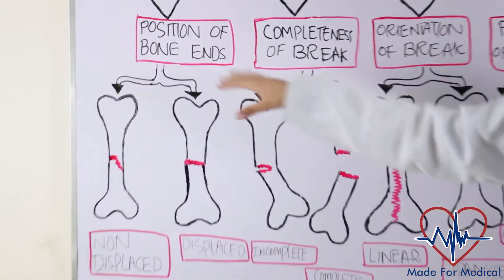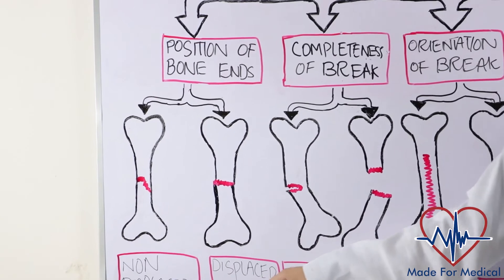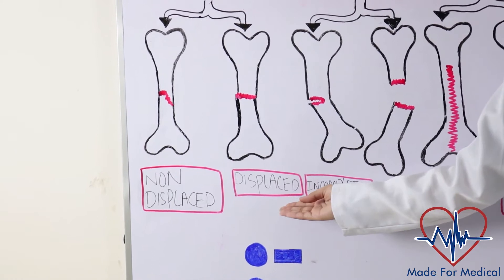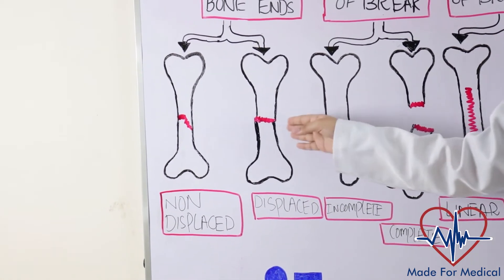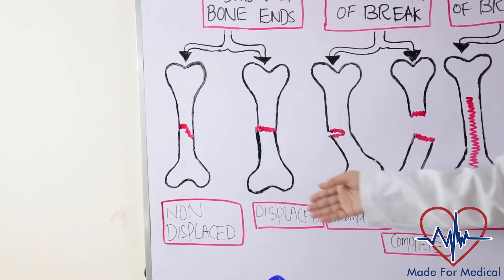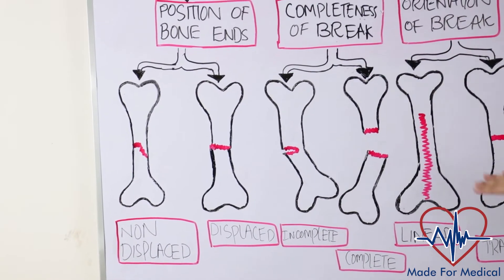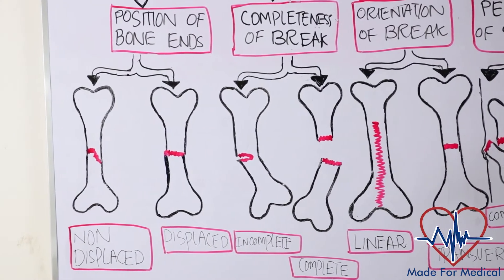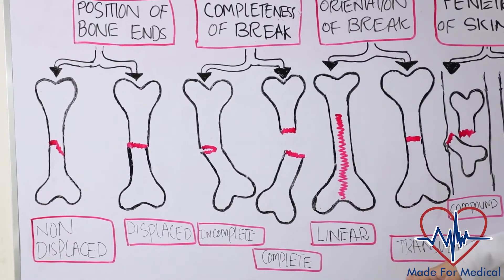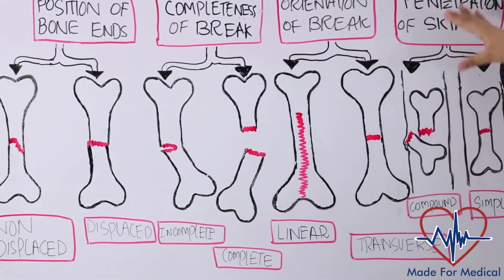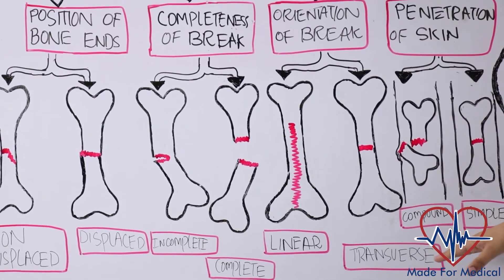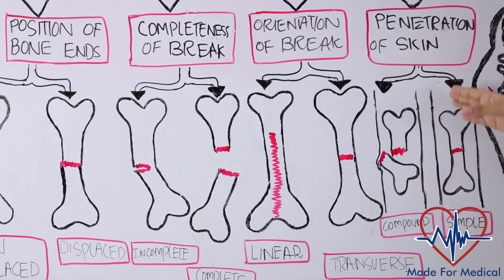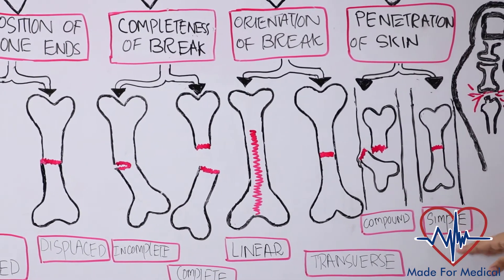The position of the bone ends can be classified into two types: non-displaced, where the bone's position does not move, or displaced, where the bone moves or is displaced. The orientation of the break refers to whether the fracture is on a vertical or horizontal axis, also known as linear or transverse. Regarding penetration of the skin: a fracture that penetrates the skin causes a compound fracture, and one that does not cross the skin causes a simple fracture.